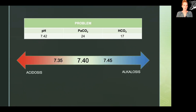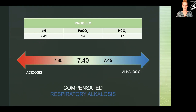Looking at the partial pressure of carbon dioxide, it's 24 — which is too little — so that is trending toward alkalosis as well, and that already tells us we have respiratory alkalosis since those two match up. The pH is trending toward alkalosis and the partial pressure of carbon dioxide is trending toward alkalosis. Our bicarbonate is also off — it's less than 22 — but that trends toward acidosis, so it doesn't match with our pH. That's an example of how you can still solve the problem even with a normal pH.